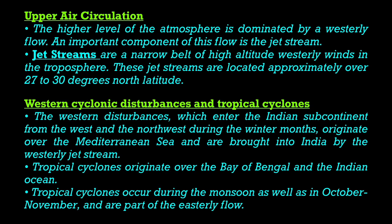Second is Upper Air Circulation. The higher levels of atmosphere are dominated by westerly flow — winds coming from the western direction. An important component of this flow is the Jet Stream, present at an altitude of 12 kilometers from the Earth's surface. Jet streams are a narrow belt of high-altitude westerly winds in the troposphere, located approximately over 27 to 30 degrees north latitude — north of the Tropic of Cancer.